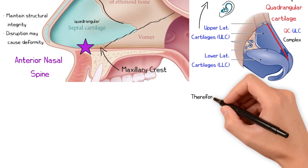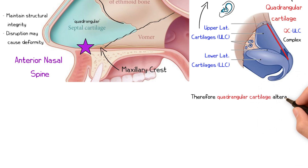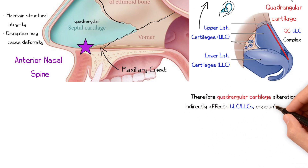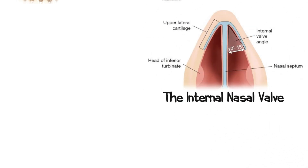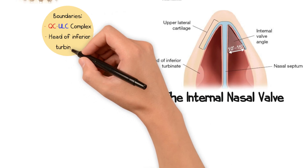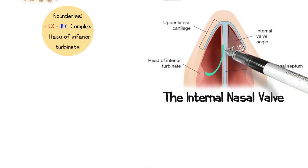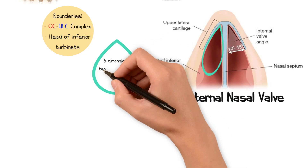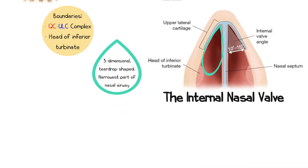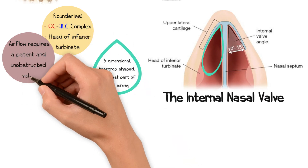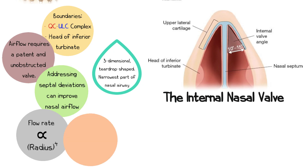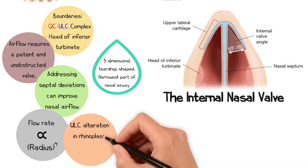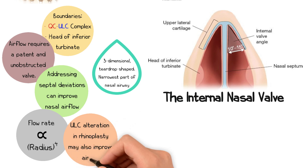As a result, deviations or alterations to the quadrangular cartilage can indirectly affect the position and stability of the upper and lower lateral cartilages, particularly influencing the nasal tip position. The QC-ULC complex forms two boundaries of the internal nasal valve, with the head of the inferior turbinate forming the third. The internal nasal valve is a three-dimensional, teardrop-shaped area that represents the narrowest part of the nasal airway. Nasal airflow depends upon a patent and unobstructed internal nasal valve. Addressing septal deviations impacting this area can improve nasal breathing. However, modifications to the upper lateral cartilage during rhinoplasty can also alter the dynamics of the valve, thus affecting airflow.